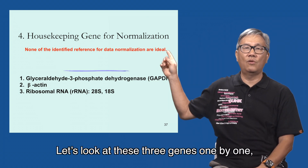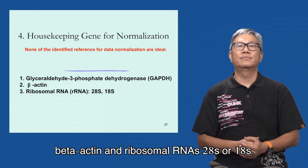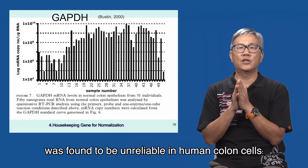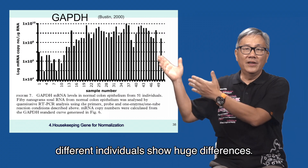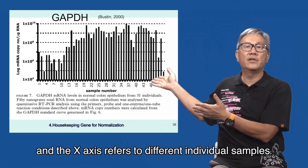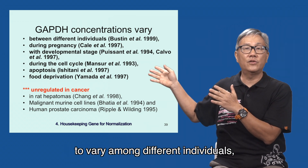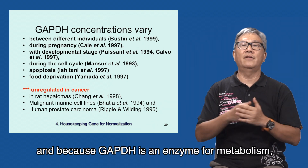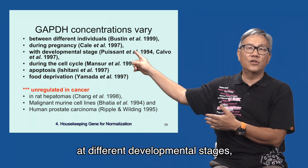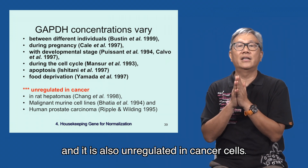Let's look at these three genes one by one: GAPDH, or glyceraldehyde-3-phosphate dehydrogenase; beta-actin; and ribosomal RNAs 28S or 18S. GAPDH as the first gene was found to be unreliable in human colon cells — different individuals showed huge differences, as seen in this graph where the y-axis is a large scale and the x-axis refers to different individual samples. GAPDH concentrations are well known to vary among different individuals, and because GAPDH is an enzyme for metabolism, it can change during pregnancy, at different developmental stages, in different cell cycles, under food deprivation, and it is also upregulated in cancer cells.